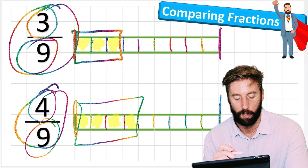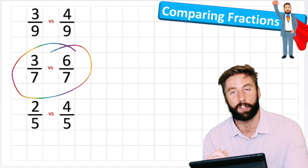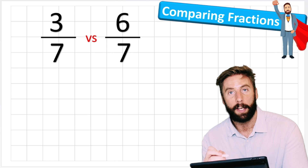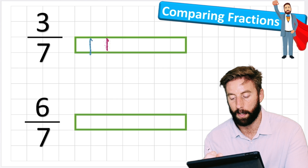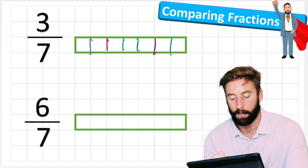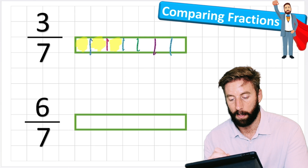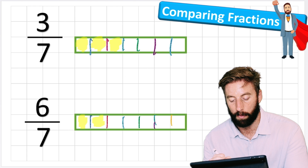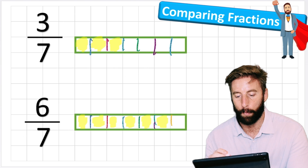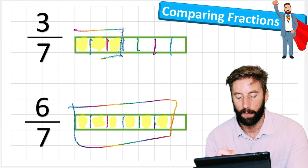Let's see if that works for question two: three sevenths or six sevenths. I'll create my model again - imagine the chocolate bar split into seven. Let's do that: one, two, three, four, five, six, and seven pieces. The top one gives me three sevenths - one, two, three. The bottom one is chopped into seven pieces but this time I'm getting six of them: one, two, three, four, five, six. It's pretty obvious which one we'd rather have - we have much more in this one. So again, the greater numerator wins.